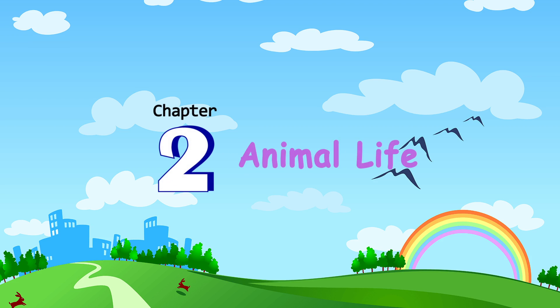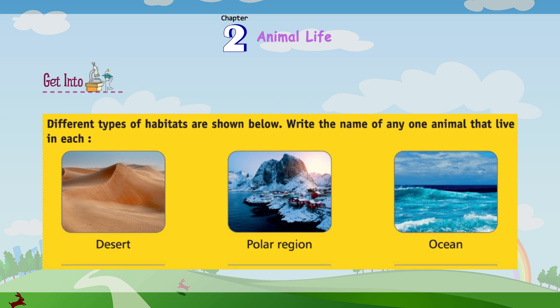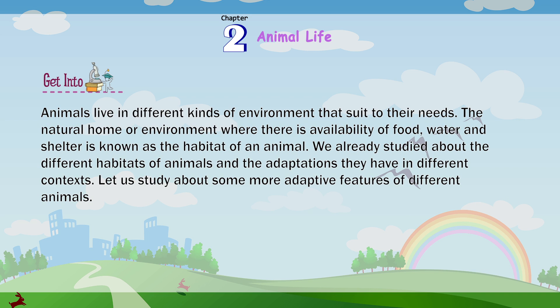Chapter 2: Animal Life. Different types of habitats are shown below. Write the name of any one animal that lives in each: Desert, Polar region, Ocean. Animals live in different kinds of environments that suit their needs. The natural home or environment where there is availability of food, water and shelter is known as the habitat of an animal. We already studied about the different habitats of animals and the adaptations they have. Let us now study about some more adaptive features of different animals.